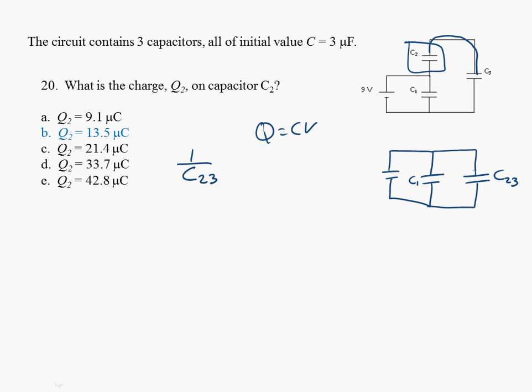1 over capacitance of 2, 3 is just equal to 1 over the capacitance of 2 plus 1 over the capacitance of 3. So this is 1 over 3 plus 1 over 3. So now I know that this equivalent capacitor 2, 3 is just equal to 1.5 microfarads.